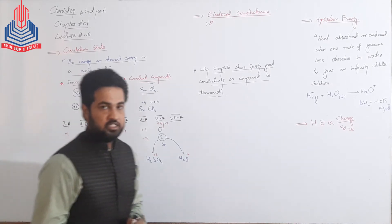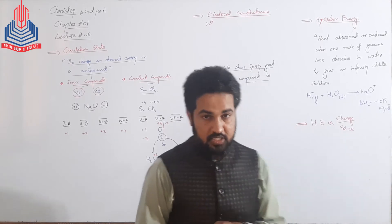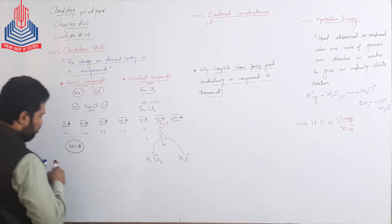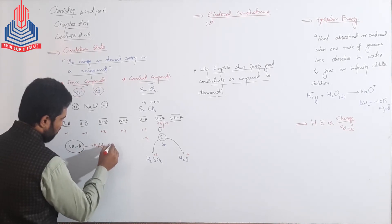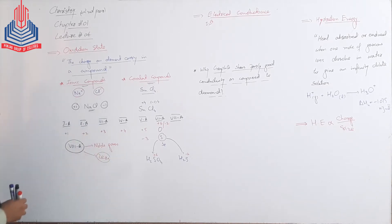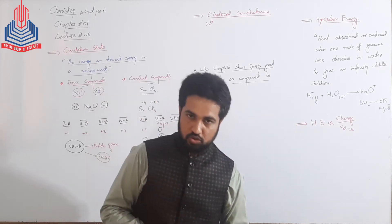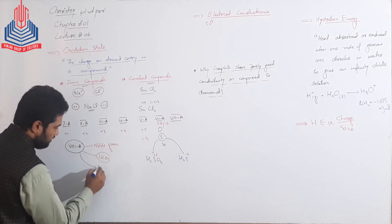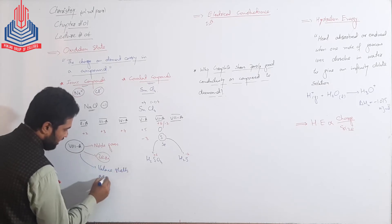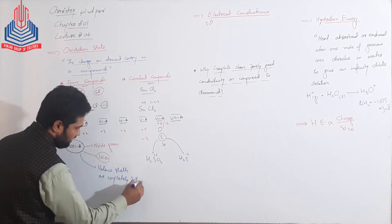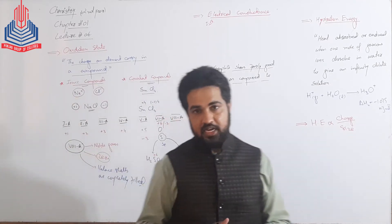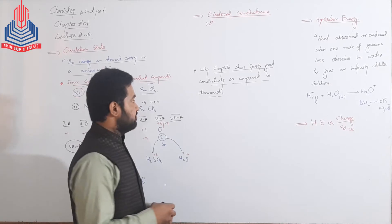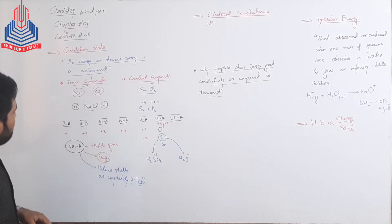Halogens کے valence shell میں ایک electron کی vacancy ہوتی ہے، تو halogens can also exhibit minus one oxidation state۔ Group 8A is known as noble gases، اور noble gases کی oxidation state is zero — کیونکہ noble gases کے valence shells are completely filled۔ Completely filled ہونے کی وجہ سے نہ ان کے پاس electrons کی vacancy ہے، نہ ہی وہ آسانی سے دوسرے elements کے ساتھ reaction کرتے ہیں۔ اسی وجہ سے they have zero oxidation states۔